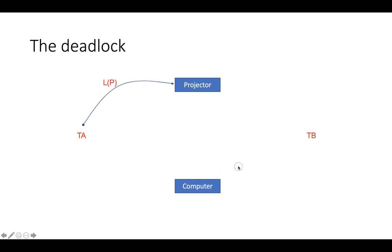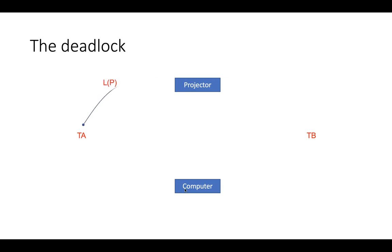We're going to demonstrate the simple idea of deadlock. We have two resources: one is the projector and another one is the computer. This is the simplest case of deadlock. Transaction A says it's going to use the projector — it requests the lock for the projector, and since it's free, it's granted.